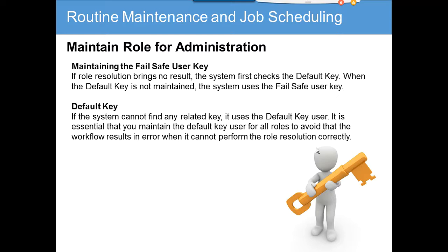We are going to cover the role for administration — maintaining the role for administration. This is important because it will stop some of the workflow errors, stop workflows from going into error. You want to keep someone as a fail-safe person who will get any errors. Generally it's the administrator or the business process owner. If it's related with AP, it should be the AP manager or director; if it's related with supply chain or procurement, it should be the manager or director.